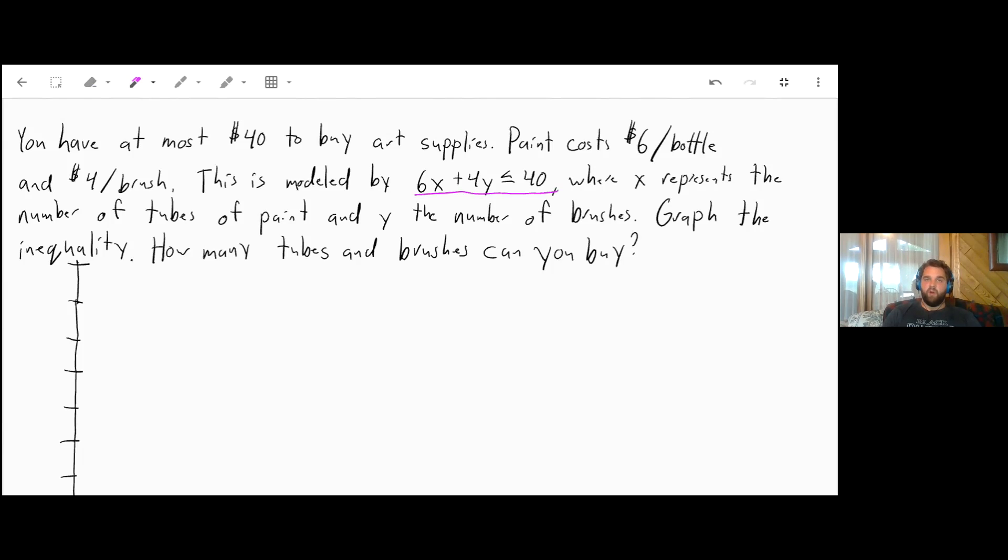I'll graph this inequality by finding our x and y intercepts first. The x-intercept comes when y equals 0. So 6x + 4(0) ≤ 40. 4 times 0 is 0, so that cancels out that term. Divide both sides by 6. x is less than or equal to 6 and 2/3.